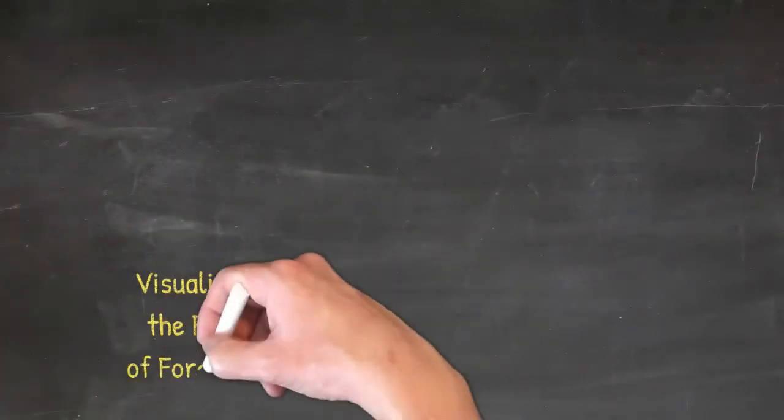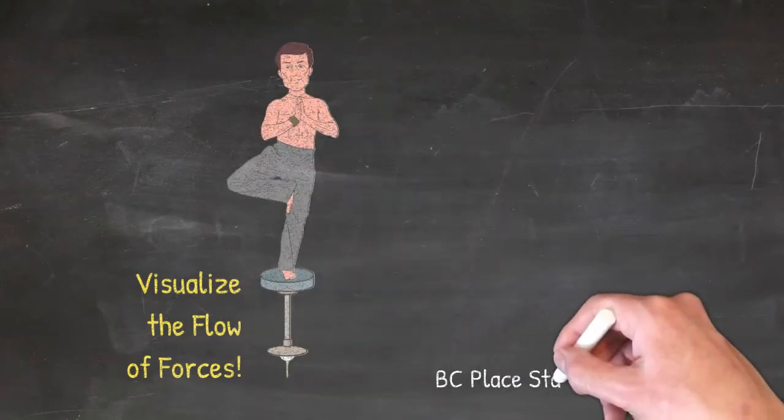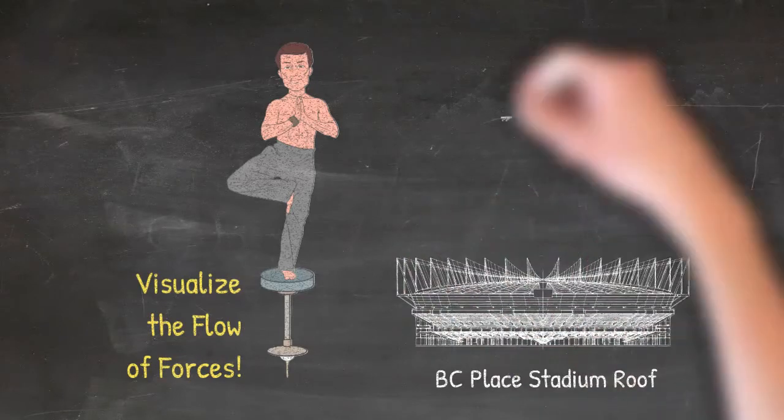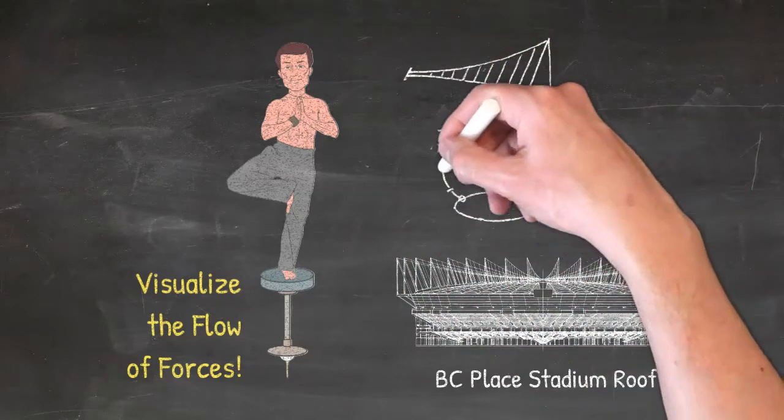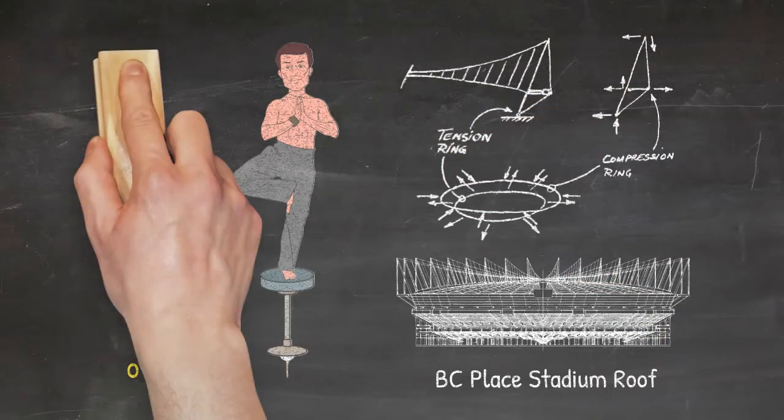In addition to physical geometry, you need an aptitude to envision the flow of forces through a structure. This will help you gain a deeper understanding of structural systems and their fundamental behavior. For example, the suspension roof of the BC Place Stadium relies on a tension and compression ring to counterbalance the roof loads.